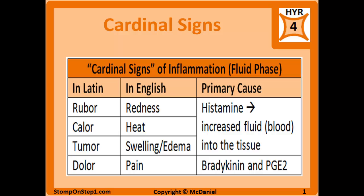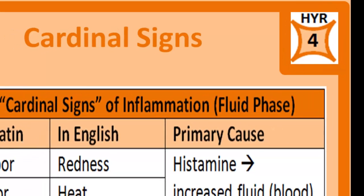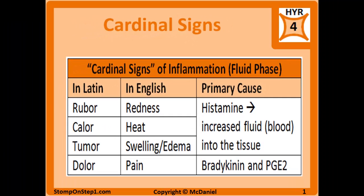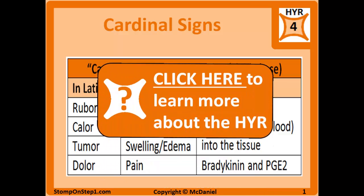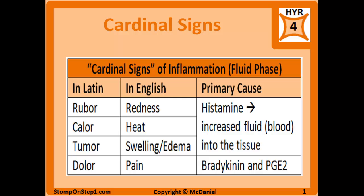We will start with the cardinal signs of inflammation, and you can see here in the top right corner I've given a high yield rating of 4. For those of you that are not familiar with the high yield rating, it's a rating scale from 0 to 10 that gives you a rough estimate for how important each topic is for the USMLE Step 1 exam. The cardinal signs are primarily referred to in their Latin names: rubor is redness, calor is heat, tumor is swelling or edema, and dolor is pain.